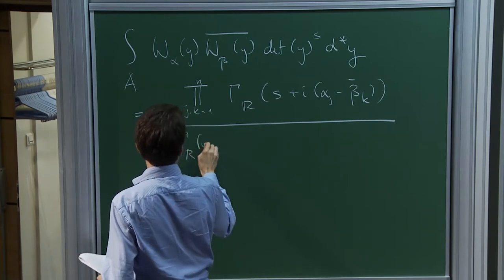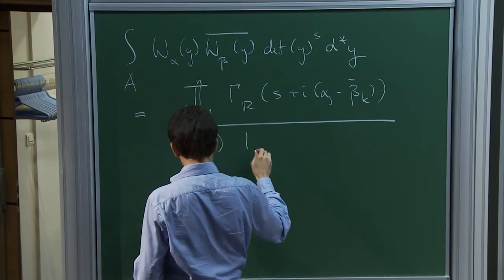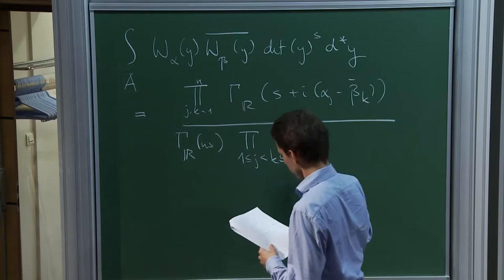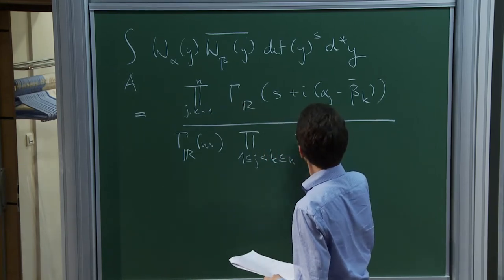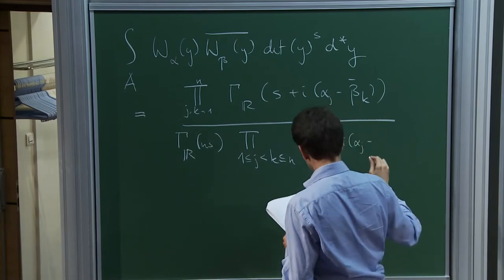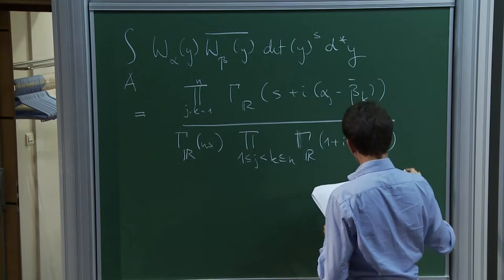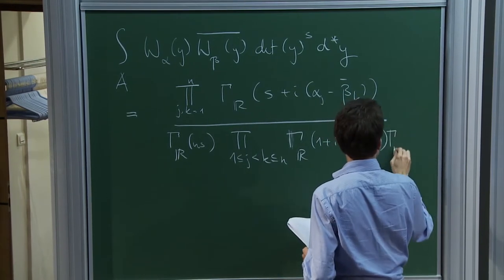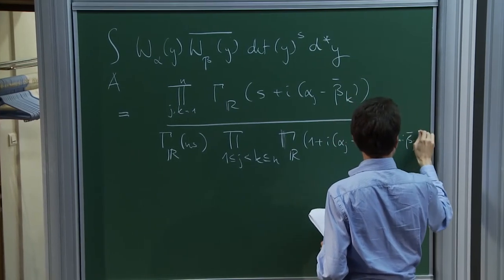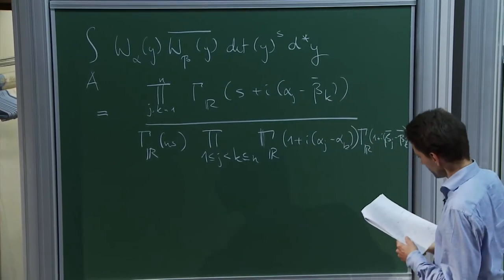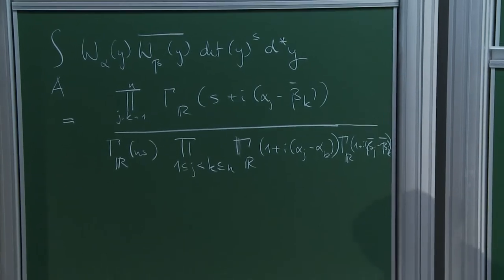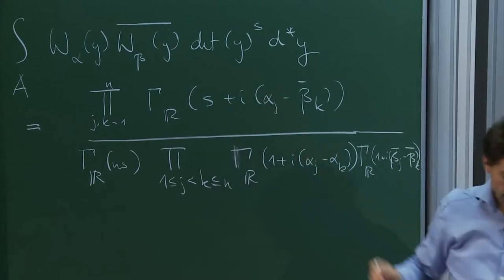Divided by gamma_r of ns, times the product over 1 < j < k ≤ n of gamma_r of 1 plus i*(alpha_j minus alpha_k), times gamma_r of 1 plus i*(beta_j minus beta_k), everything barred. So we will use this a million times today, and what I would like to introduce now is Rankin-Selberg theory for GL_n.